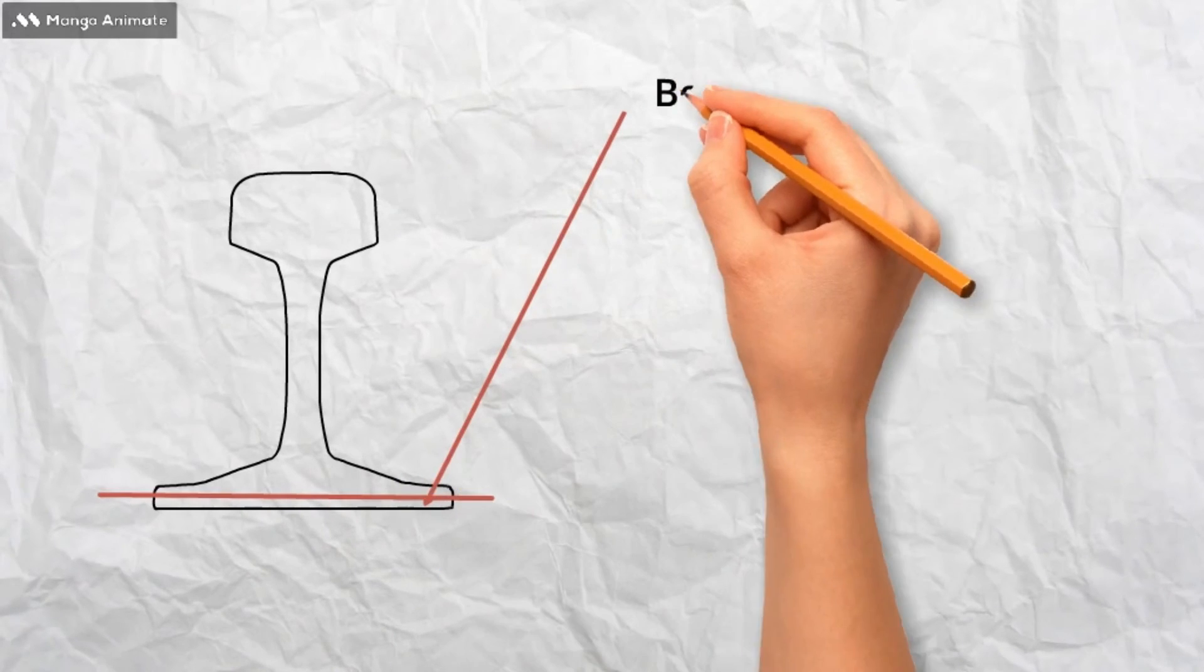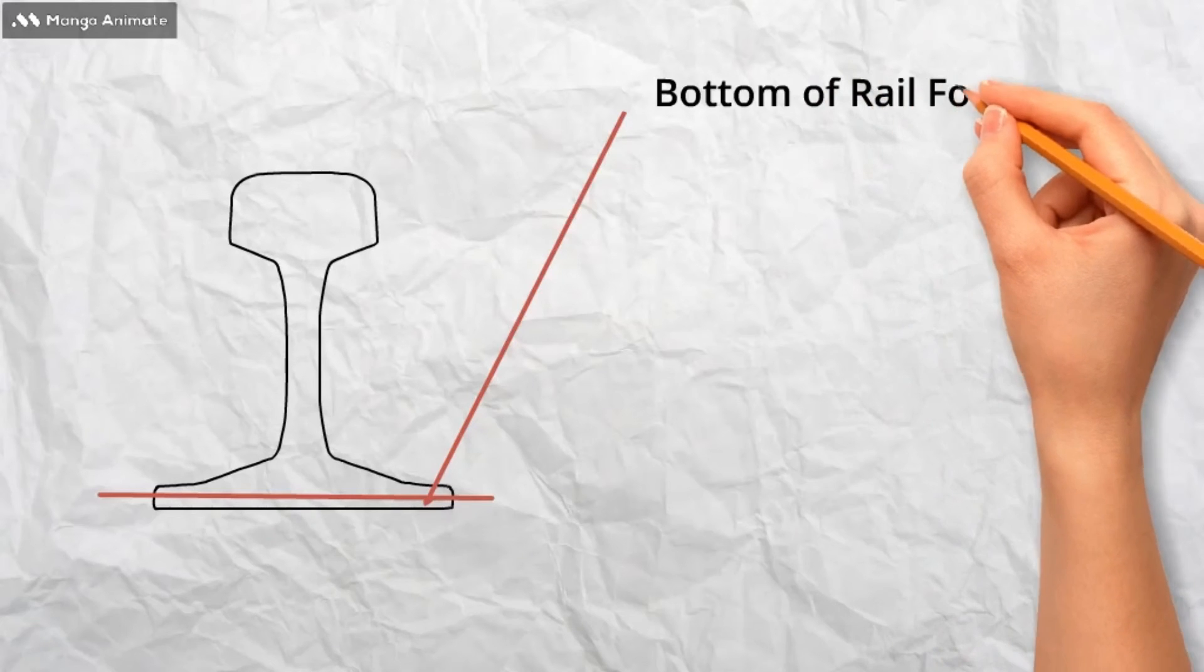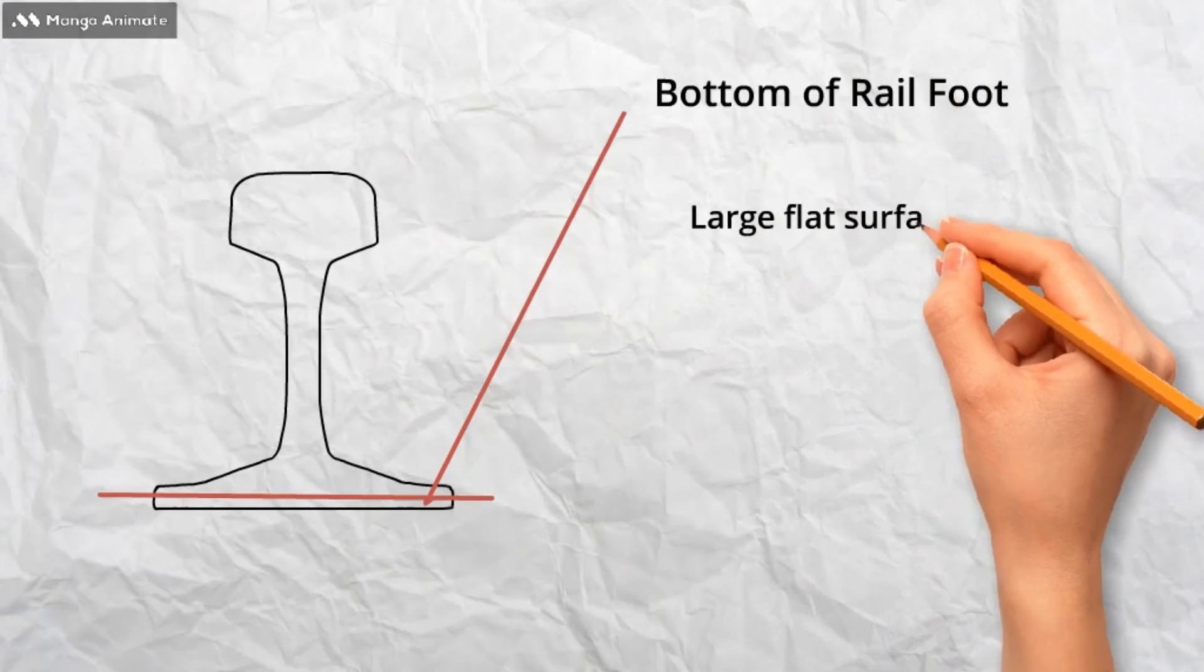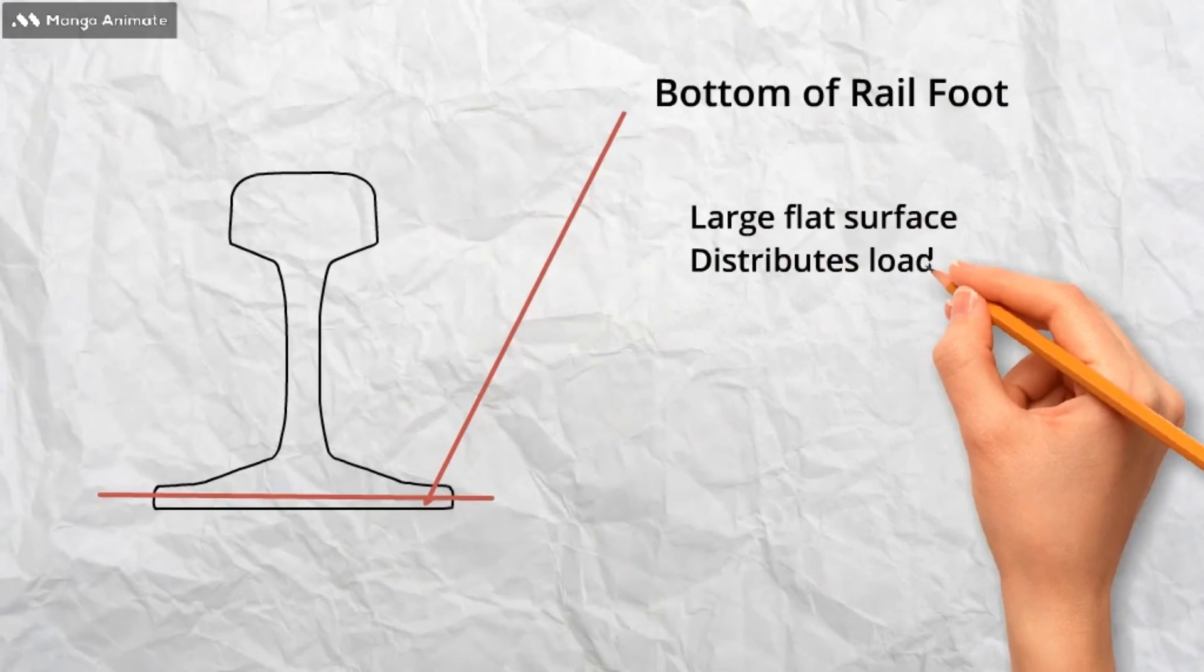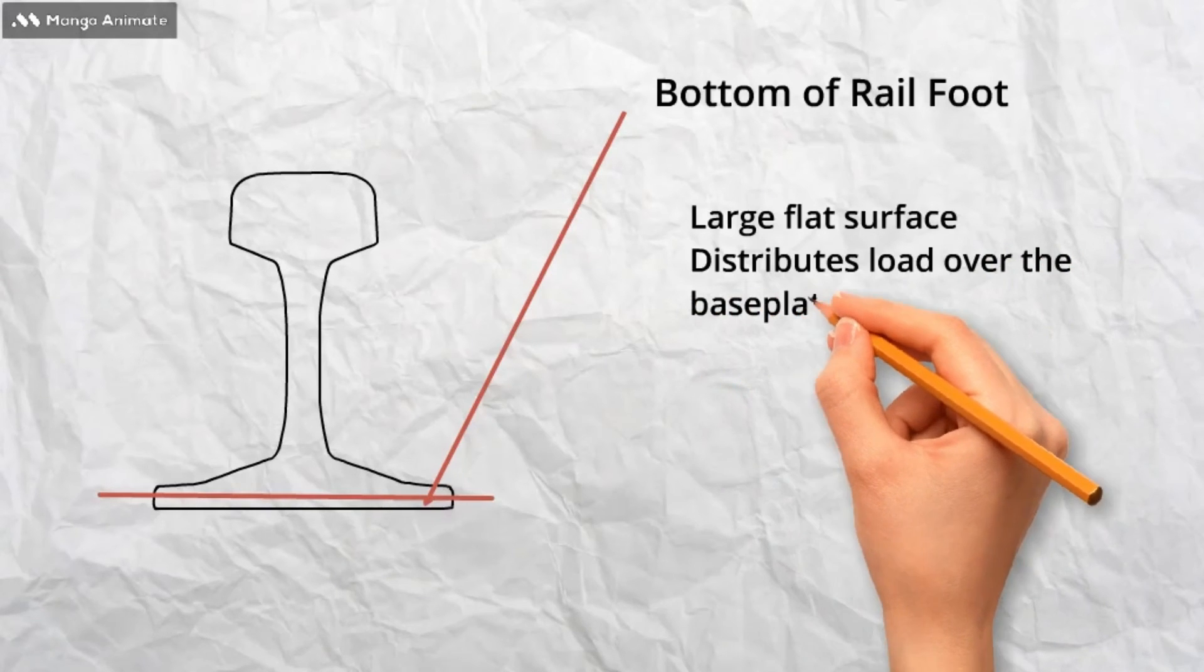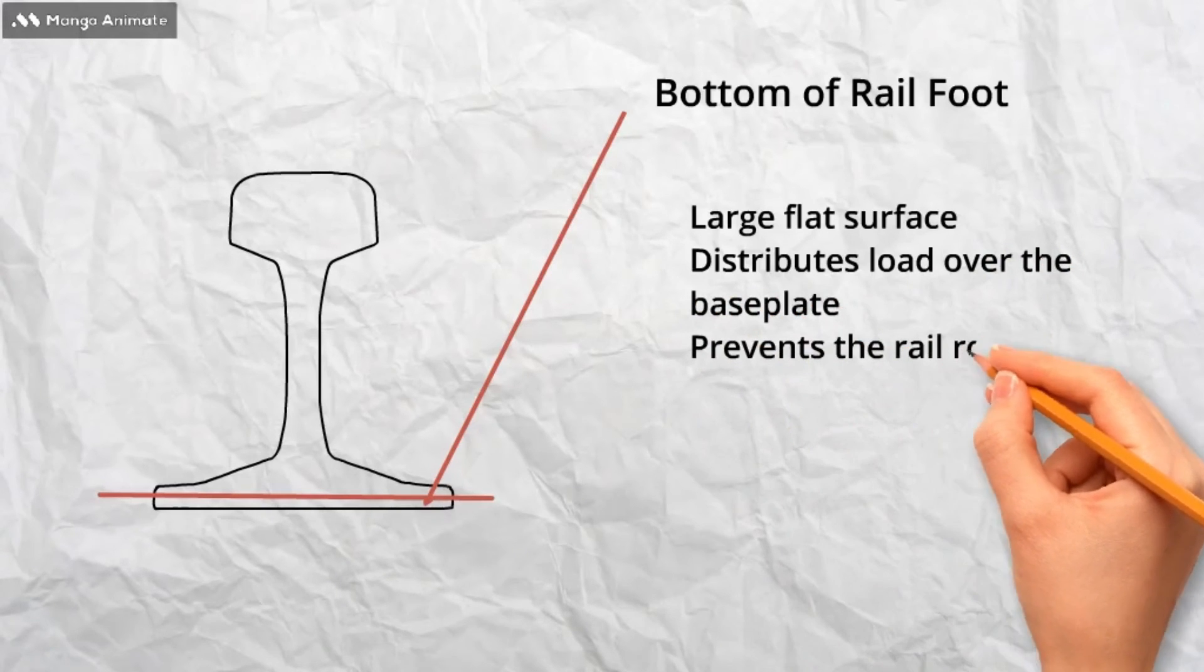Lastly, we come to the bottom of the rail foot. This large flat surface is critical to the overall construction of the rail. It distributes the load equally over the base plate in which it sits along with preventing rotation of rail that can be caused by lateral forces of passing trains.